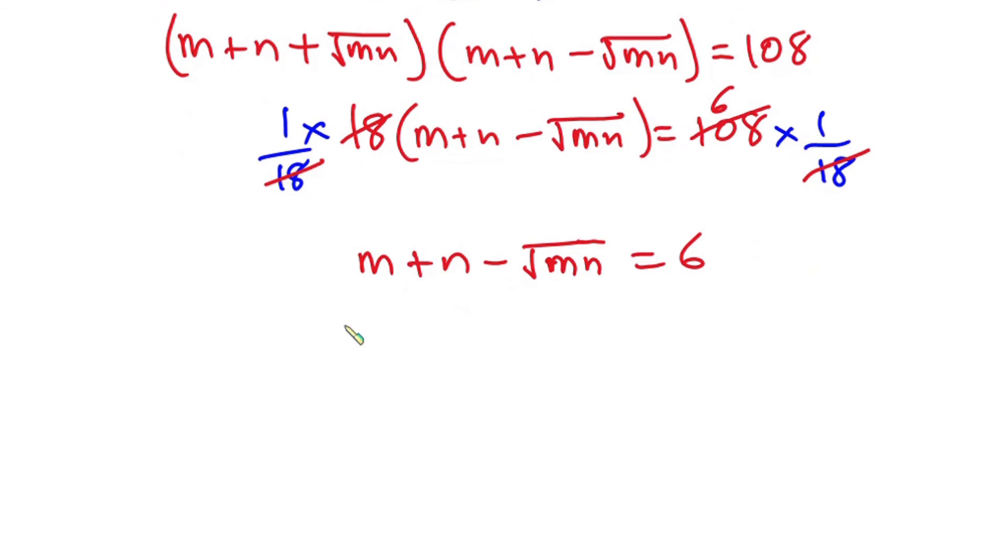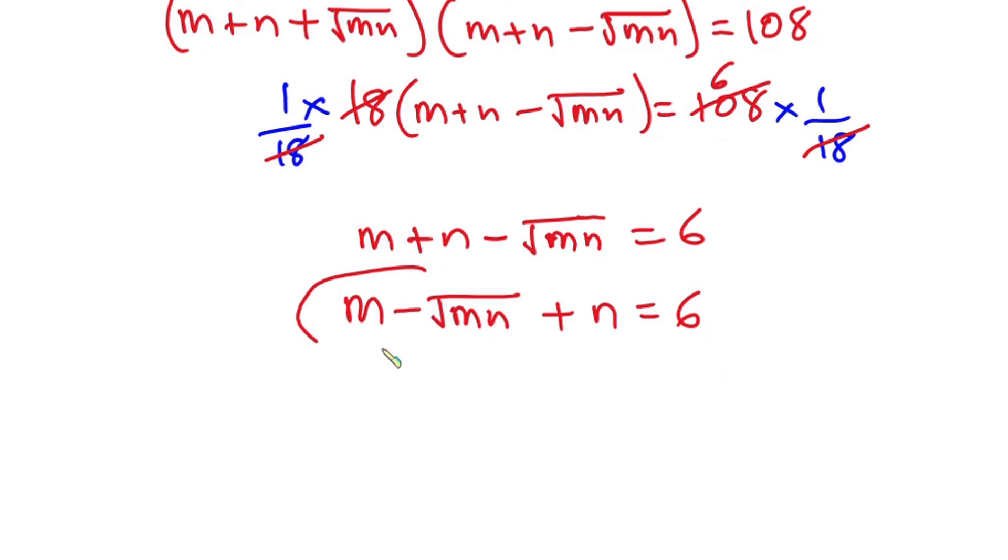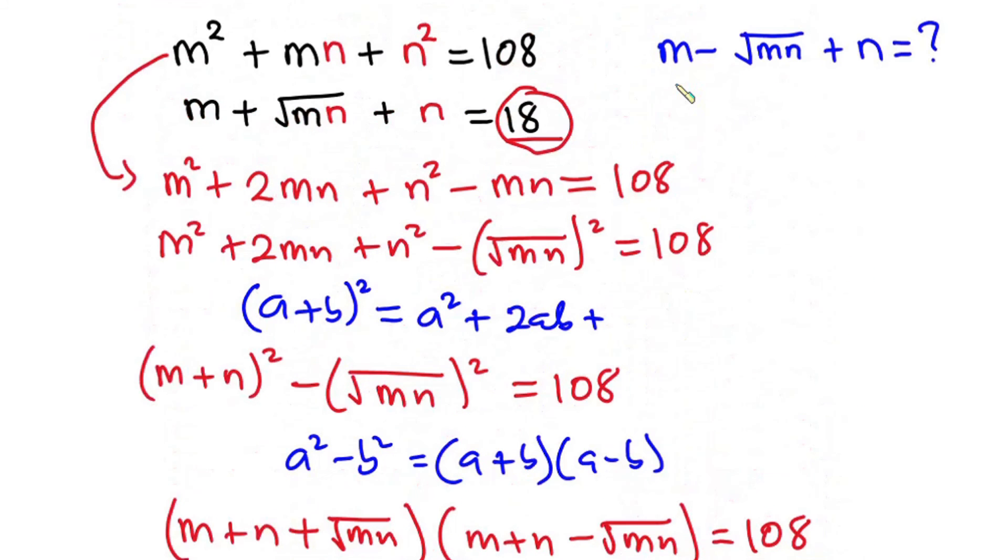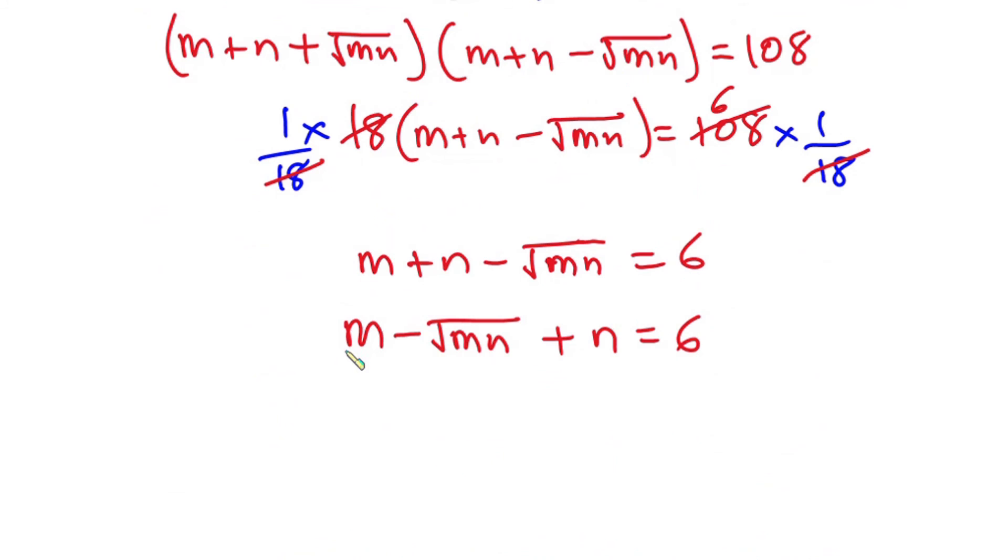Now rearranging this, we have m minus the square root of mn plus n, and this equals 6. Comparing this whole thing to what we were asked to find, you can see that they are the same. So we can conclude that m minus square root of mn plus n equals 6.